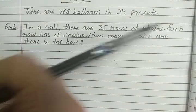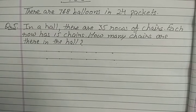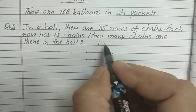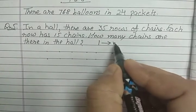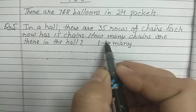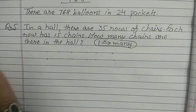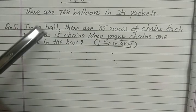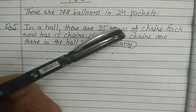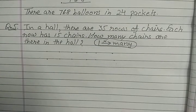Each means one. One row mein kitni chairs hai? 15 chairs. And one row mein aapko chair given hai. Aur aapko 35 rows mein chairs batani hai. Toh many — one row mein chair given hai aur 35 rows ki chairs aapko batani hai. So what we have to do? We have to multiply. One row mein chair di hui hai aur 35 rows mein aapko total chairs batani hai, so we have to multiply.